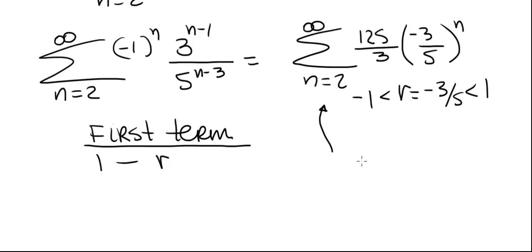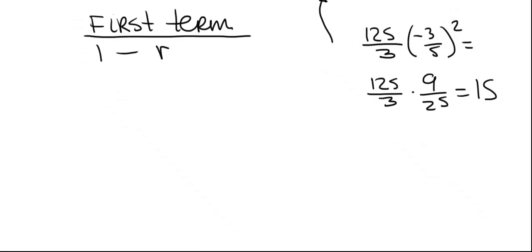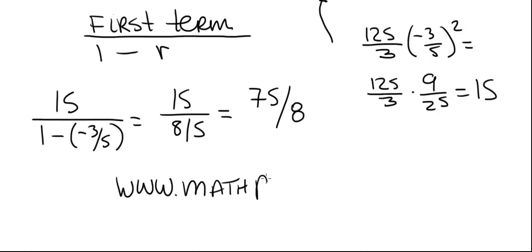The first term is found by plugging in n = 2: (125/3) · (-3/5)^2 = (125/3) · (9/25) = 15. So the first term is 15 and the common ratio r is -3/5. The series converges to 15 / (1 - (-3/5)) = 15 / (8/5) = 75/8. So we have two ways of doing it, and either one is about the same level of difficulty. For more videos, visit www.mathprepvideos.com.